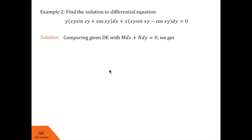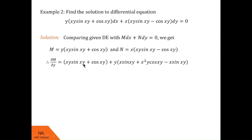Comparing with M dx + N dy = 0, we get M = y(xy sin xy + cos xy) and N = x(xy sin xy − cos xy). To calculate ∂M/∂y keeping x constant, we use the product rule: ∂M/∂y = (xy sin xy + cos xy) + y·[x sin xy + xy·cos xy·x − sin xy·x] = xy sin xy + cos xy + x² y cos xy + x² y cos xy − xy sin xy.